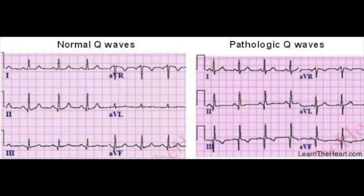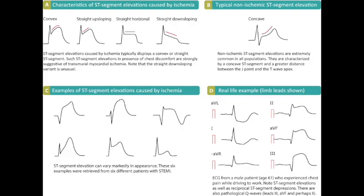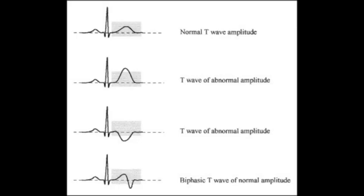Step six: evaluate the ST segment — is there ST depression or elevation greater than one millimeter? Step seven: evaluate T waves — any T wave inversions, T wave flattening, or QT prolongation (importantly).